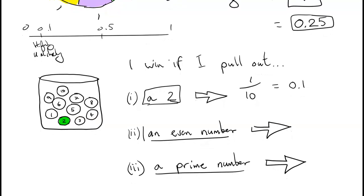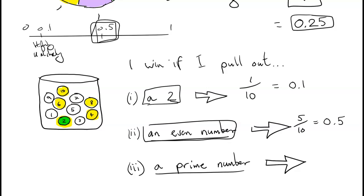What if I win if I get an even number? There are 5 even numbers — 2, 4, 6, 8, and 10 — so that's 5 possible winning balls. That's 5 out of 10, which as a decimal is 0.5. Still wouldn't want to bet a huge amount of money on it, because it's only a 50-50 chance.